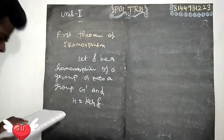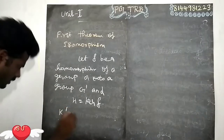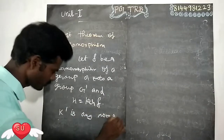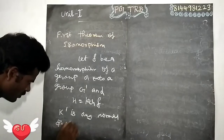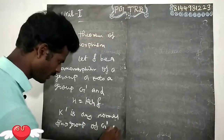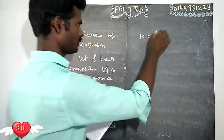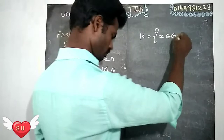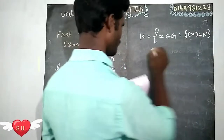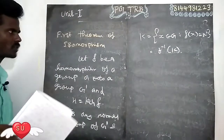H is the kernel of F. In this case, K-dash is a normal subgroup of G-dash. K is any normal subgroup of G-dash. K equals the kernel — that is, K equals the set of x in G such that F of x is in the kernel-dash.